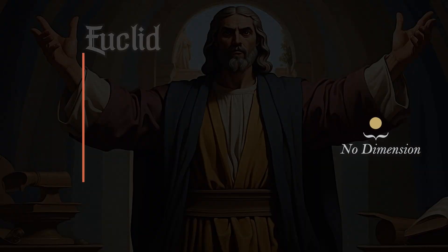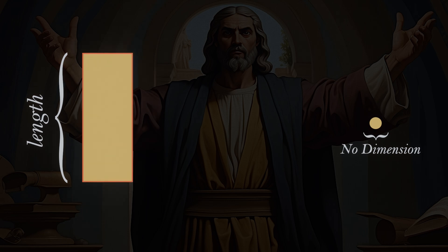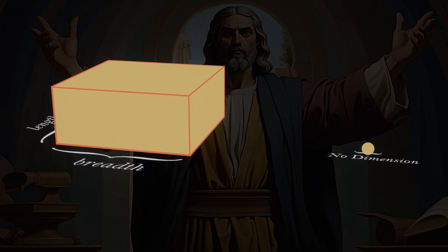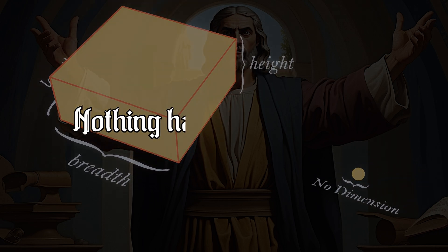A line has one dimension: length. A plane has two dimensions: length and breadth. A solid has three dimensions: length, breadth, and height. And there it stops. Nothing has four dimensions.